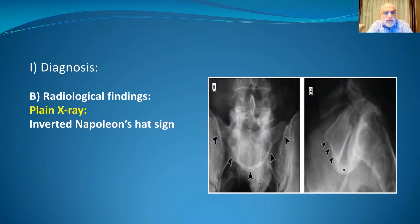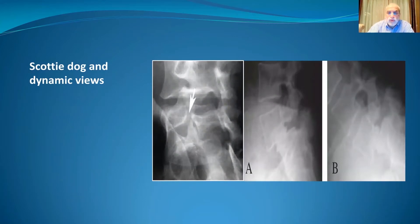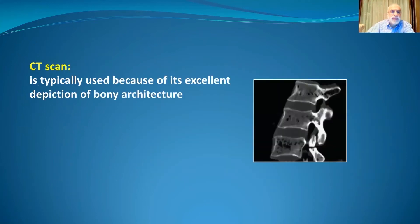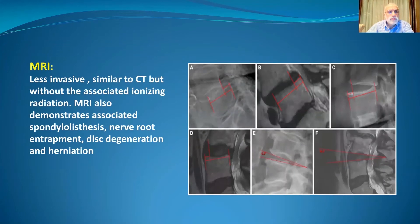Radiological findings on plain X-ray include the inverted Napoleon's hat sign, the Scotty dog sign, and dynamic views which allow us to assess the amount of instability. CT scan is typically used because of its excellent demonstration of bony architecture. MRI, which is less invasive and without ionizing radiation, also demonstrates associated spondylolisthesis, nerve root entrapment, disc degeneration, and herniation — which is important if we decide to fuse the patient and which might occur at levels other than the level of spondylolisthesis.